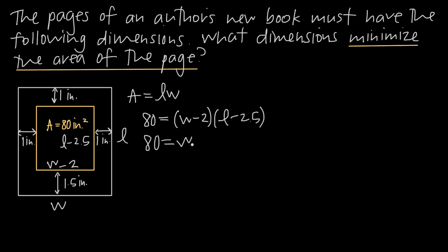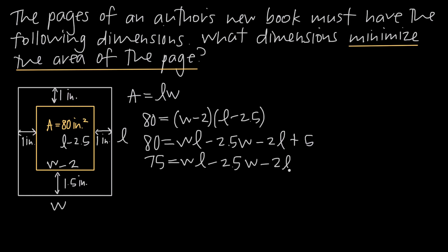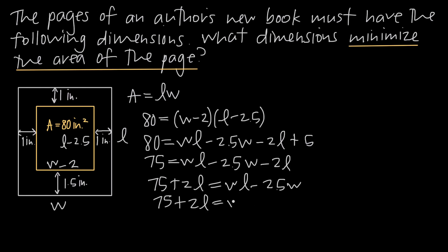Multiplying that out: 80 equals wl minus 2.5w minus 2l plus 5. Subtracting 5 from both sides gives 75 equals wl minus 2.5w minus 2l. Adding 2l to both sides: 75 plus 2l equals wl minus 2.5w. Factoring w out of the right-hand side: 75 plus 2l equals w times (l minus 2.5). Dividing both sides by (l minus 2.5), we get w equals (75 plus 2l) divided by (l minus 2.5).